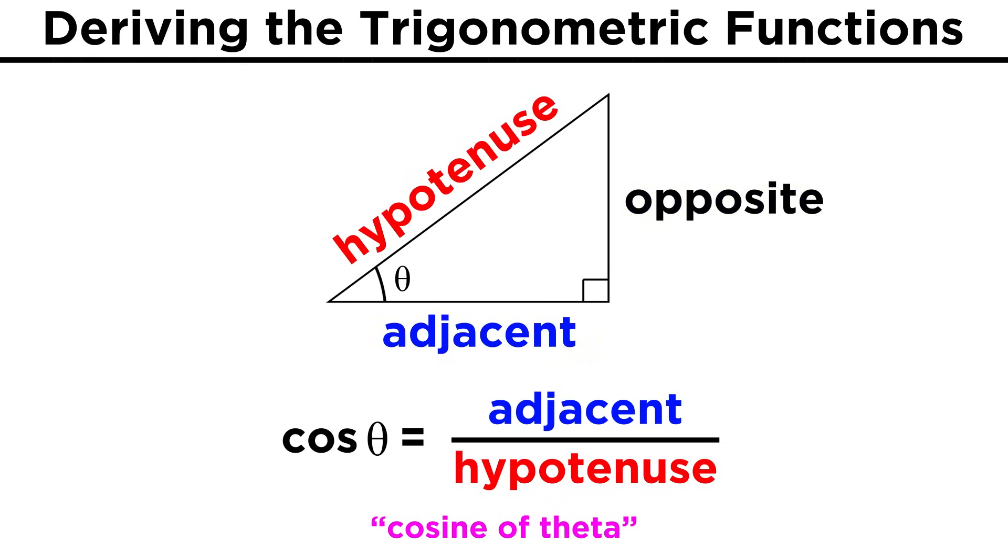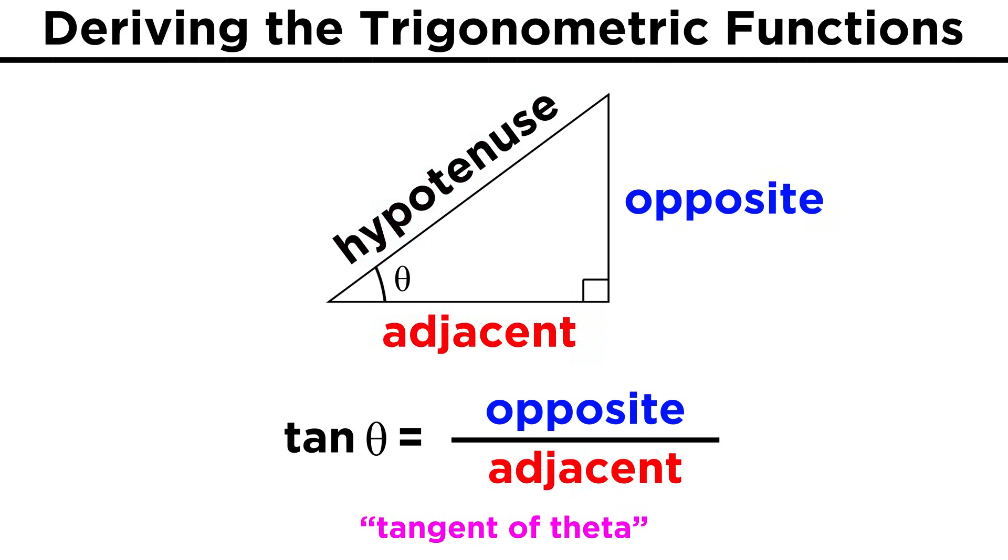The cosine of theta will be equal to the length of the adjacent leg over the length of the hypotenuse, and the tangent of theta will be equal to the length of the opposite leg over the length of the adjacent leg.